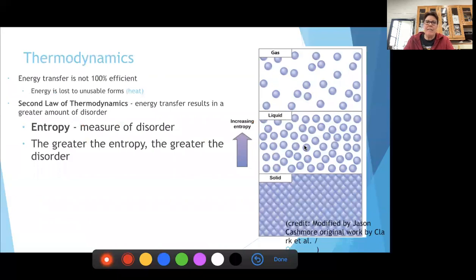When we talk about transferring energy, not all energy is transferred. We lose a lot of it in either entropy or heat. Entropy has to do with the second law of thermodynamics and that has to do with the amount of disorder. A solid is nice and organized so entropy is low.